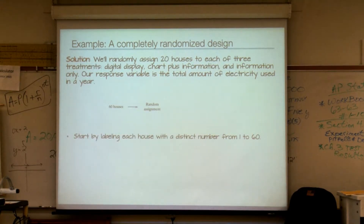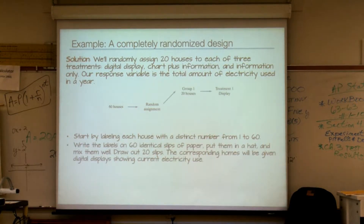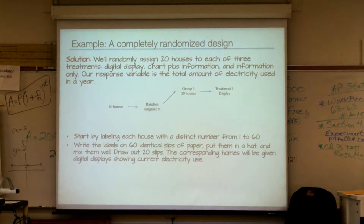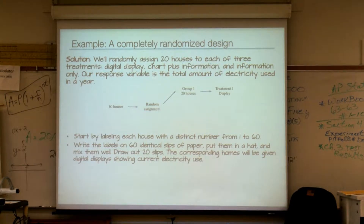We'll start by labeling each house with a distinct number from 1 to 60. Then, writing the labels on 60 identical slips of paper, we put them in a hat, mix them well, and draw out 20 slips. The corresponding homes with those numbers will be given digital displays showing the current electricity use — that's our first treatment group.